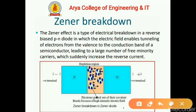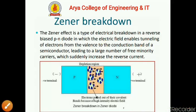The Zener effect is a type of electrical breakdown in reverse-biased p-n diodes in which the electric field enables tunneling of electrons from the valence band to the conduction band of a semiconductor, leading to a large number of free minority carriers which suddenly increases the reverse saturation current. The electric field enables tunneling from p to n and n to p — this effect is called the Zener effect.